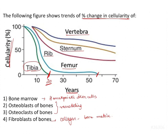Bone marrow, which is involved in hematopoiesis, will show such decrease in production of blood cells with ageing. When it comes to osteoblast and osteoclast, both are involved in remodeling. The bones have to survive throughout life due to the remodeling taking place — the pairing between osteoblast and osteoclast — where osteoblast production is paired prior to the action of osteoclast.